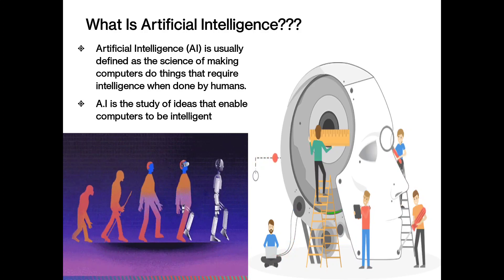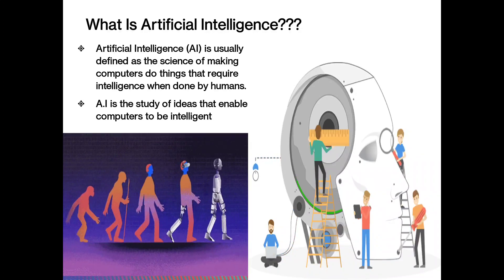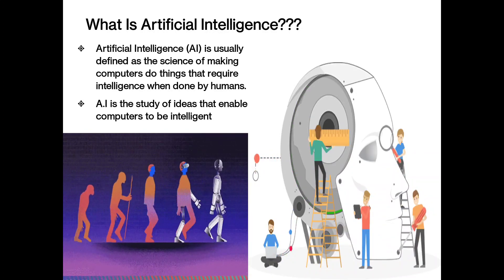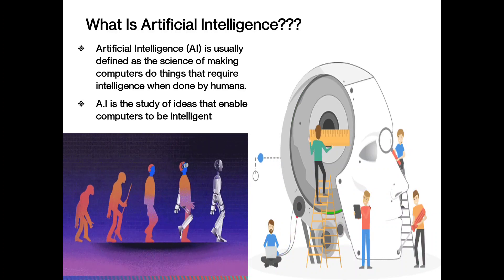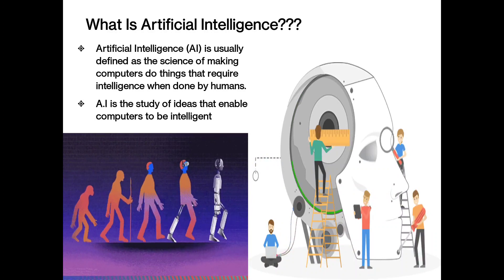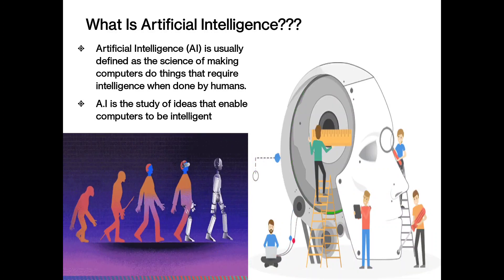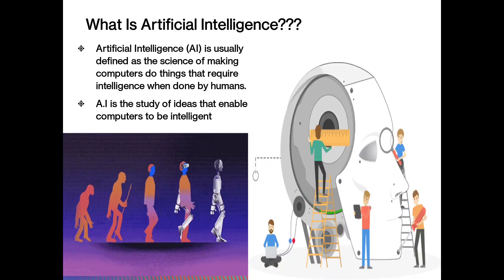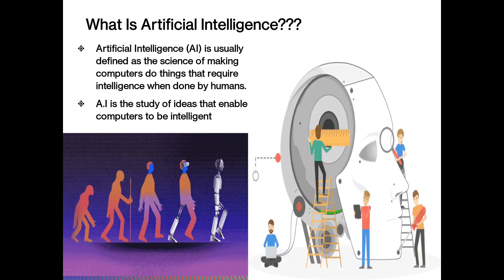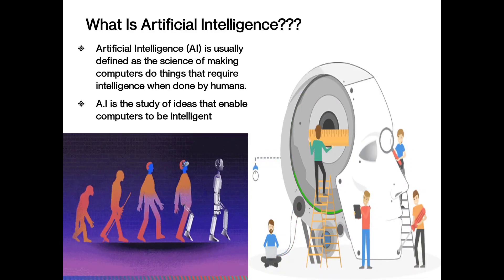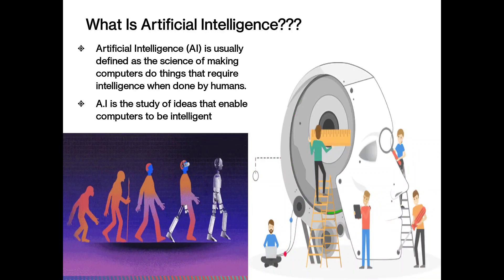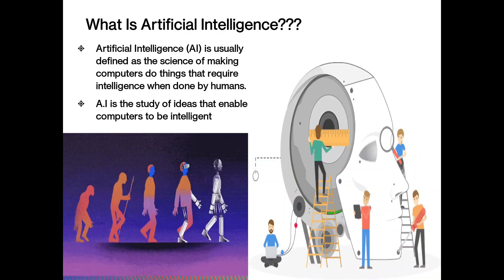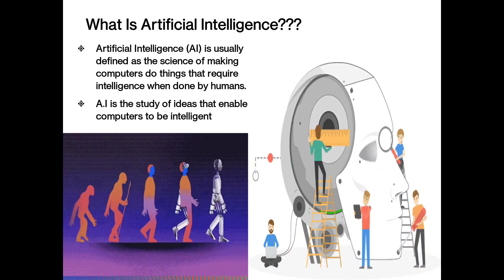Next, we are going to see about what is artificial intelligence. In short, we call it as AI. It is usefully defined as the science of making computers do things that require intelligence when done by humans. It is a study of ideas that enable computers to be intelligent. In a sense, artificial intelligence is a technique of getting machines to work and behave like humans.